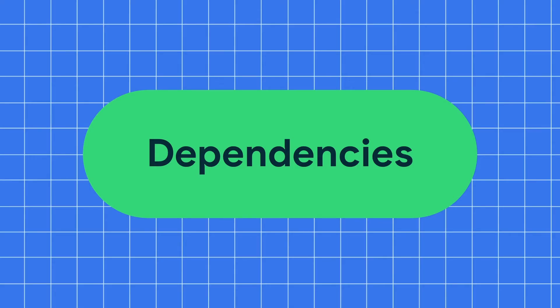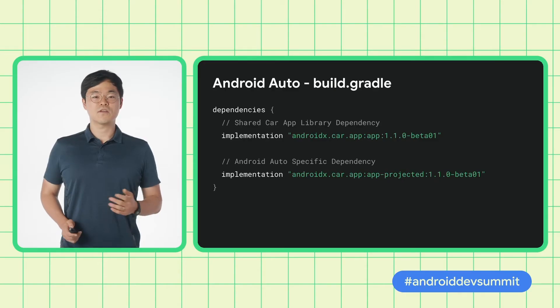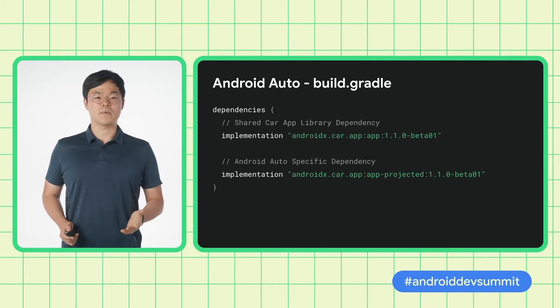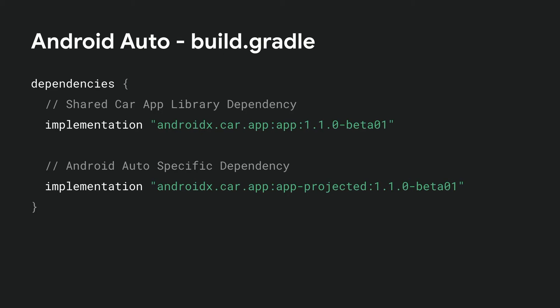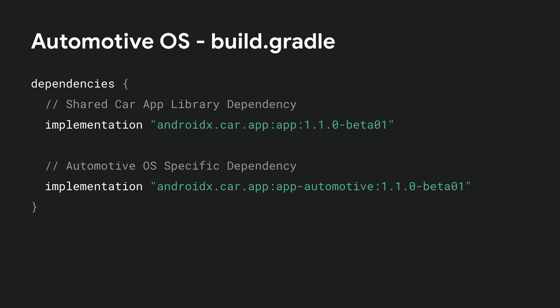Let's define the dependencies in our build.gradle files. For our app, we will depend on the 1.1.0 beta 01 version of the car app library. These are the dependencies for the Android Auto build target. We have the shared car app library dependency, as well as the Android Auto specific dependency. These are the Automotive OS dependencies. Notice that the shared library dependency stays the same, but now we have the Automotive OS specific dependency.